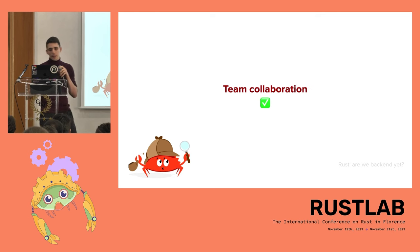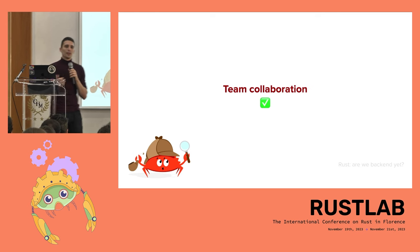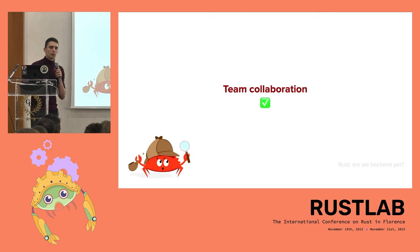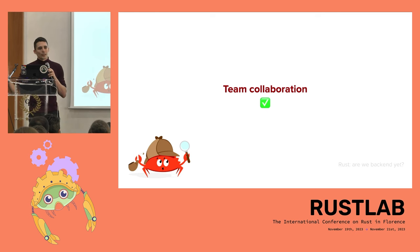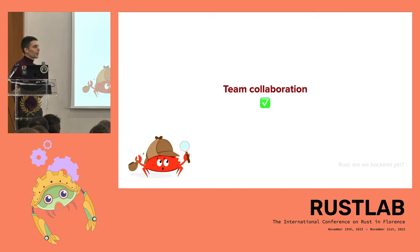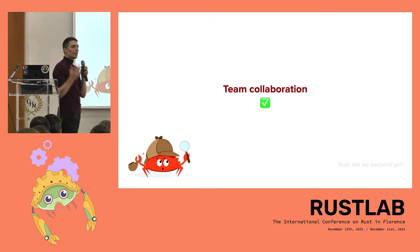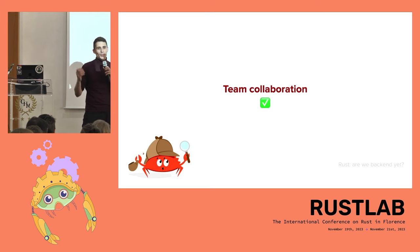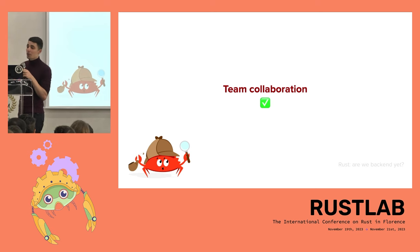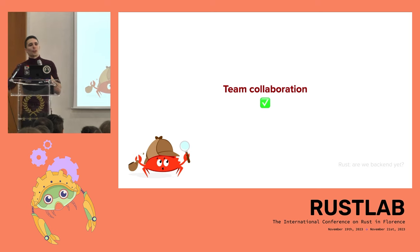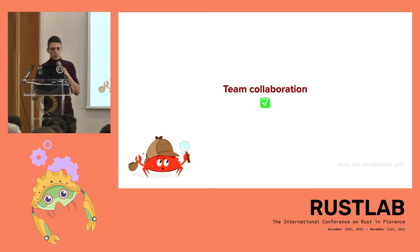Secondly, Rust is also pretty good when you're building software in a team. It features one of the most expressive type systems you can find in mainstream programming languages, outside of the ML language family like Haskell. That usually makes it so that when onboarding on a Rust codebase, you may not be able to write code that compiles, but you are prevented from pushing broken code to production, which is often a desirable property.